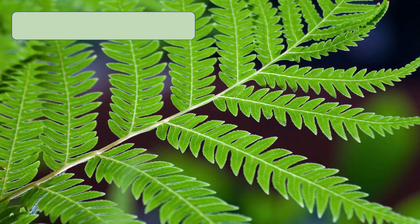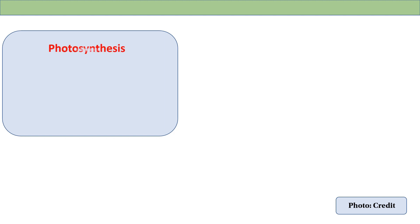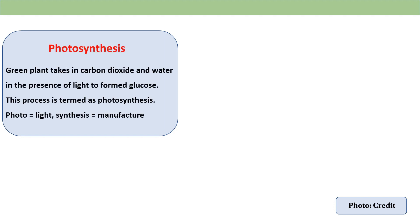The process of photosynthesis: the green plant takes in carbon dioxide and water in the presence of light to form glucose. Chlorophyll, which is called the green pigment, is used to absorb light energy. This light energy is used to convert carbon dioxide and water into glucose. This process is called photosynthesis.